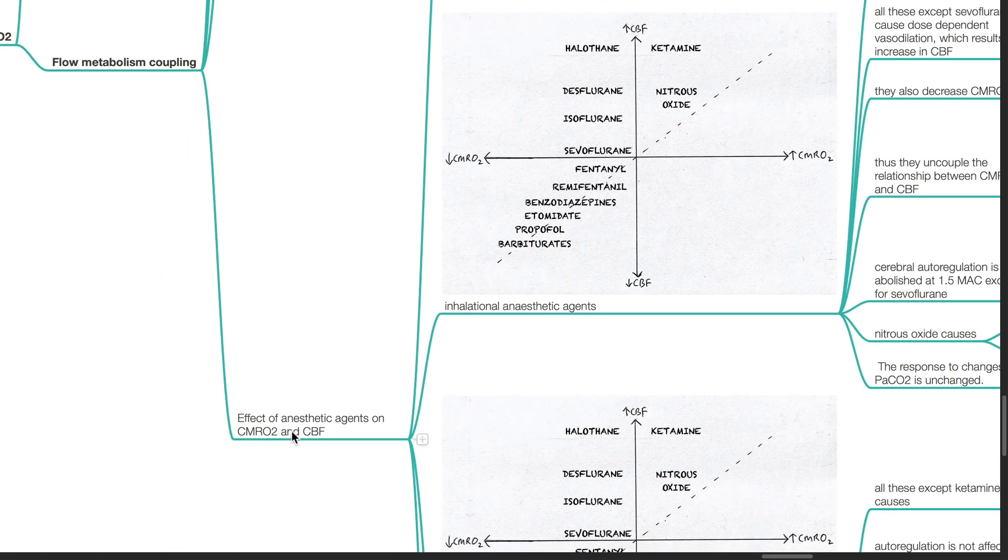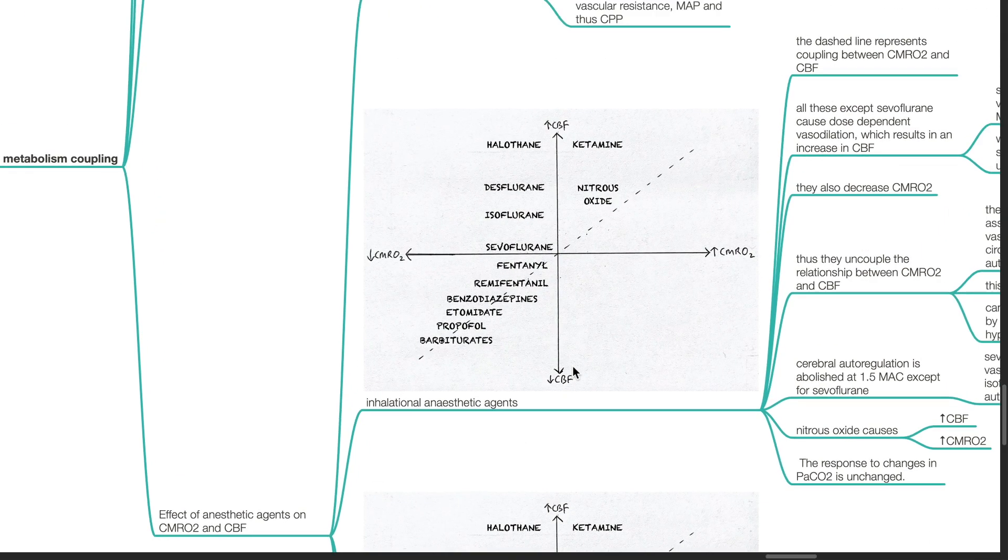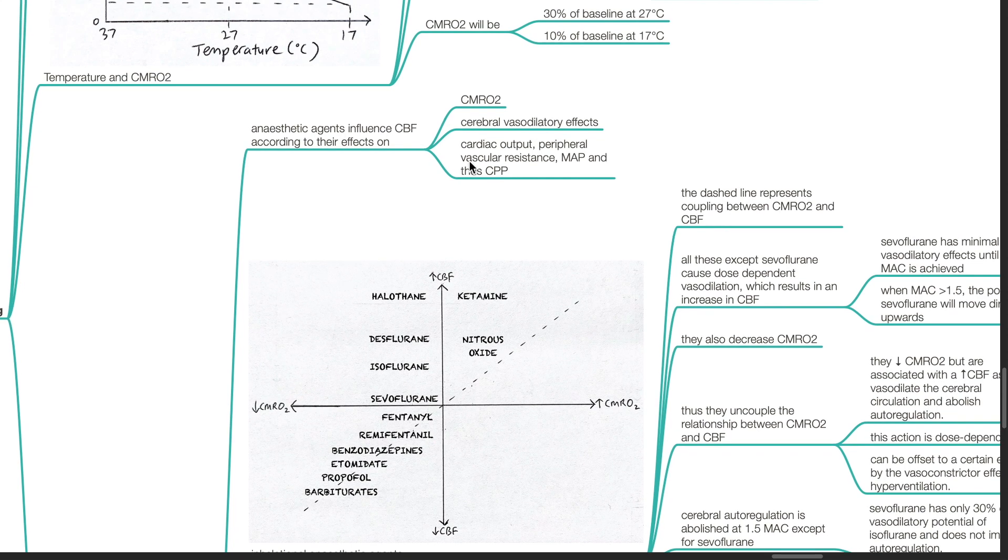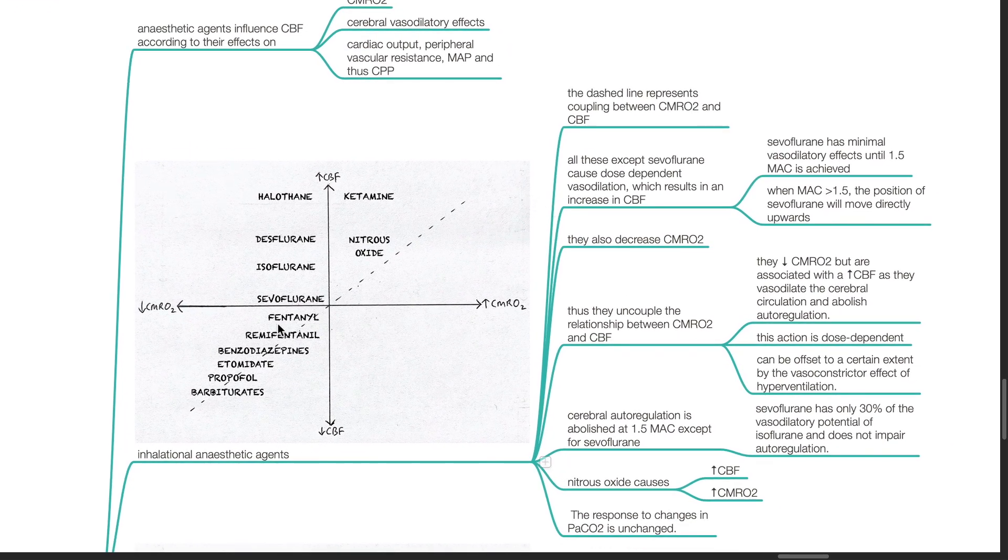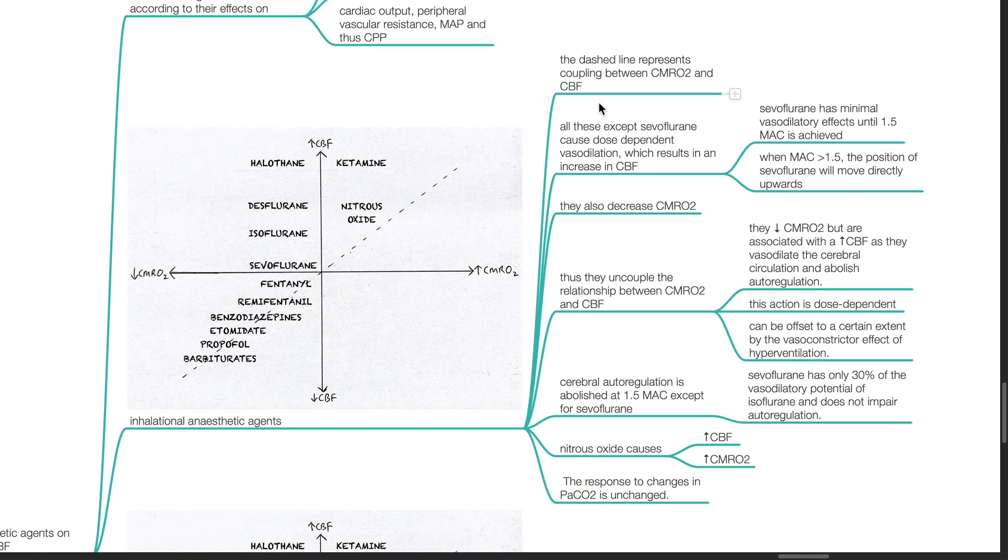Effect of anesthetic agents on CMRO2 and CBF. Anesthetic agents influence CBF according to their effects on CMRO2, cerebral vasodilatory effects, and cardiac output peripheral vascular resistance MAP and thus CPP. Inhalational anesthetic agents. The dashed line represents coupling between CMRO2 and CBF. All these except sevoflurane cause dose-dependent vasodilation which results in an increase in CBF. Sevoflurane has minimal vasodilatory effects until 1.5 MAC is achieved. When MAC exceeds 1.5, the position of sevoflurane will move directly upwards.